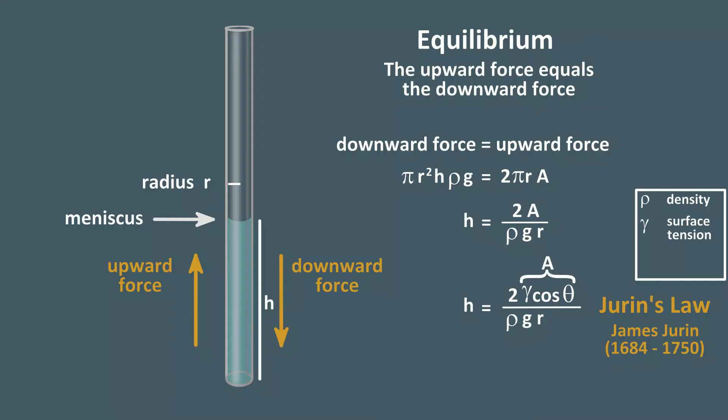our adhesive constant A is expressed as measurable quantities. Gamma, the surface tension of the liquid, which is a constant for a given liquid at a given temperature, and represents the cohesive forces between the liquid molecules.